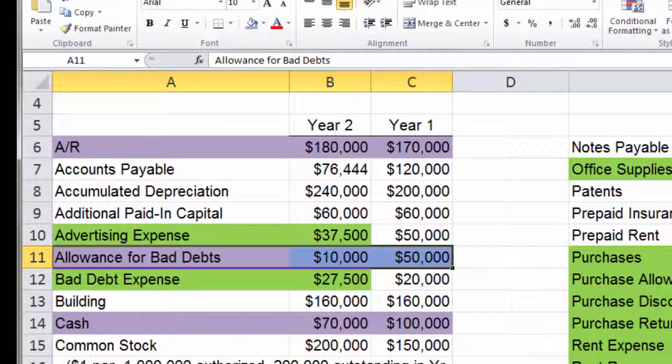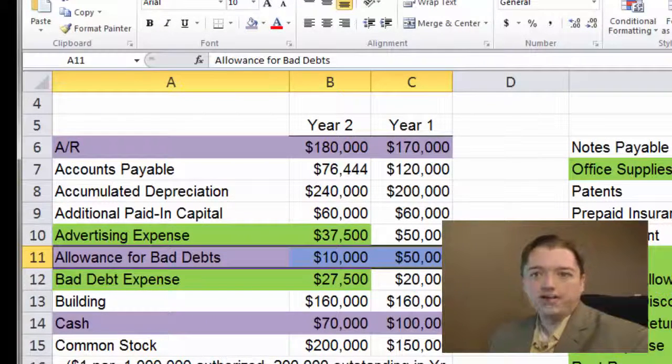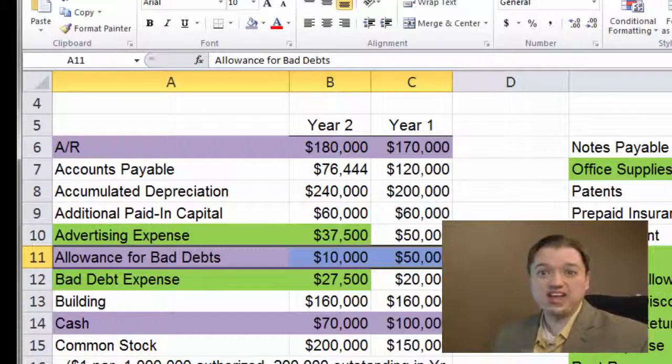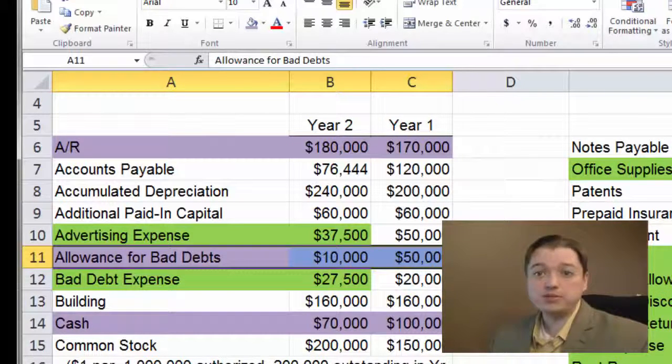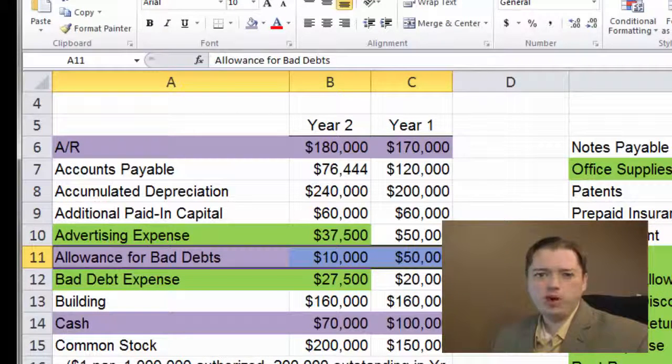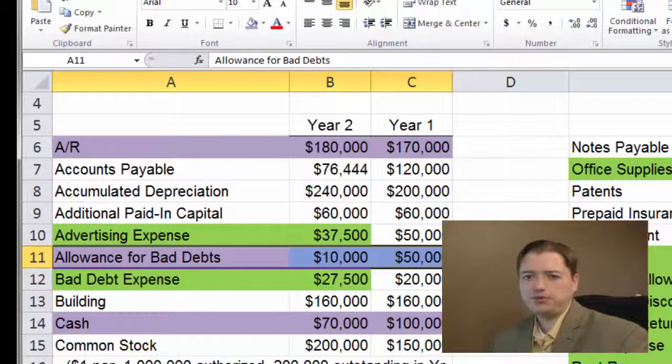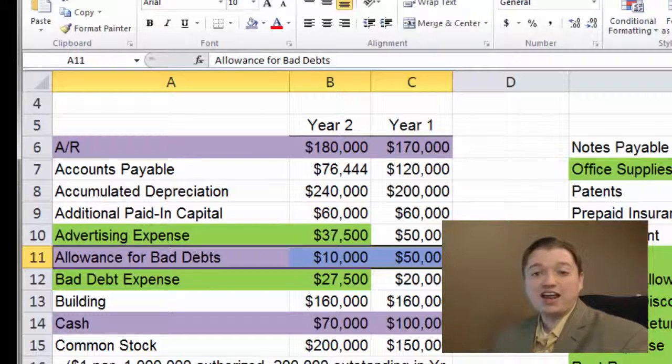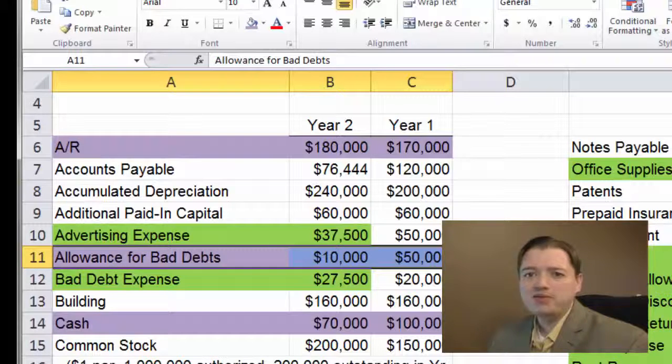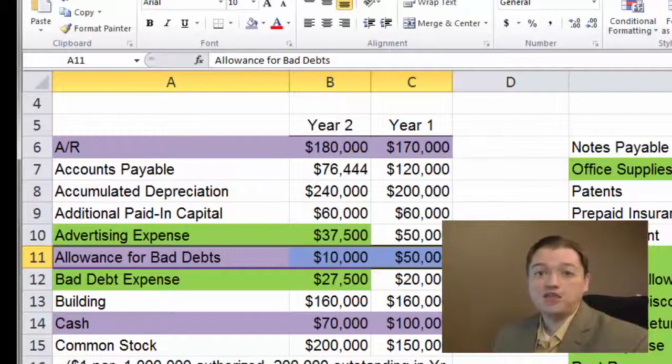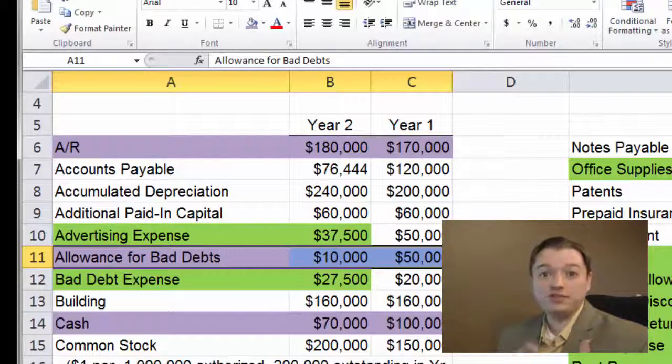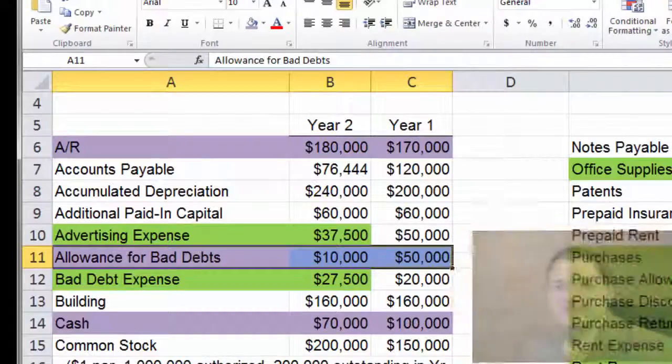Now, our next most liquid account is or should be our inventory account. I mean, after all, if we're not selling off our inventory relatively quickly and turning it into cash, then we've got pretty big problems. So we're going to use that one as our next account here. But just be aware, if you start seeing inventory slip further and further into that current assets list further down, then it means there's some kind of a problem and the company's got some issues. You want it to show up relatively high in the list of current assets.